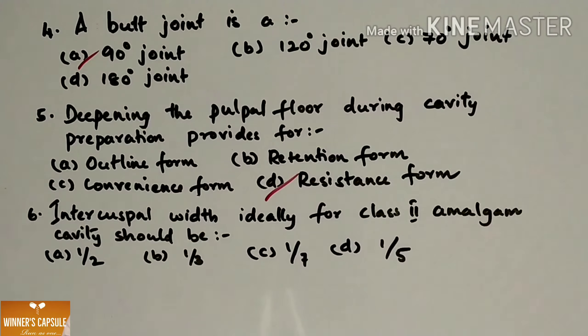Next one: Intercuspal width ideally for class 2 amalgam cavity should be 1/2, 1/3, 1/7, and 1/5. Answer is option D, 1/5.